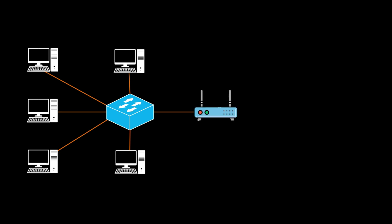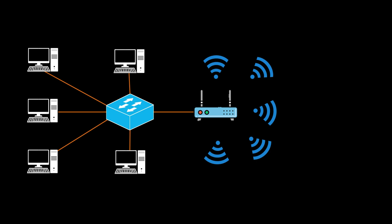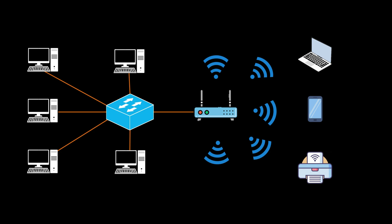Then later on, by using the wireless access point, it was proved that network communication can happen even without cable connectivity. Communication became possible without using a wire, in the form of wireless. Mobile devices like laptops, mobile phones, and wireless printers could communicate with each other using the wireless access point. This changed the total concept of computer networking.